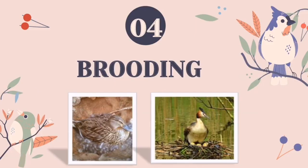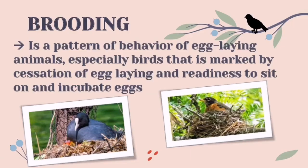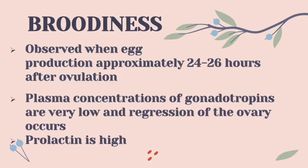Now let's proceed with our last topic, which is brooding. Brooding is a pattern of behavior of certain egg-laying animals, especially birds, marked by cessation of egg-laying and readiness to sit on and incubate eggs. Broodiness of the bird is observed when egg production declines and the hen begins to incubate her eggs, which results in a decrease in food consumption during this time. Prolactin levels are high during this time, and plasma concentrations of gonadotropins are very low, so regression of the ovary also occurs.